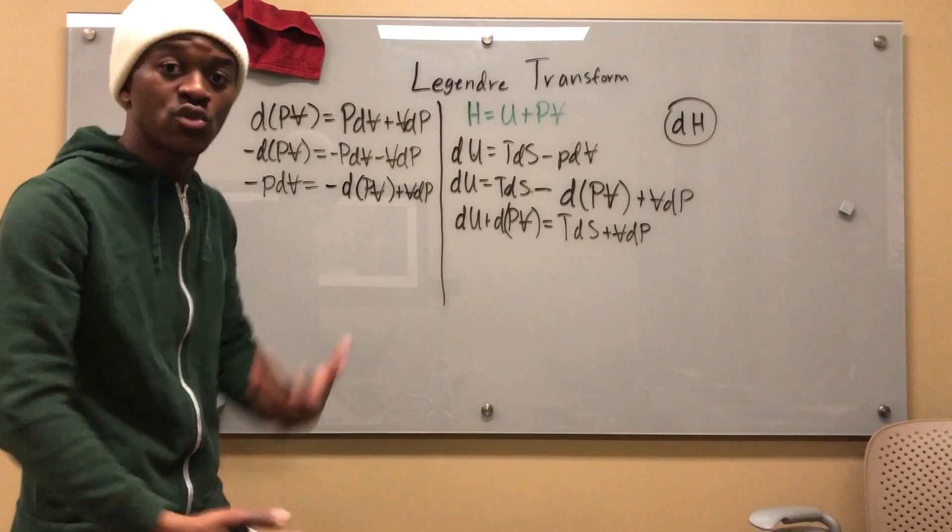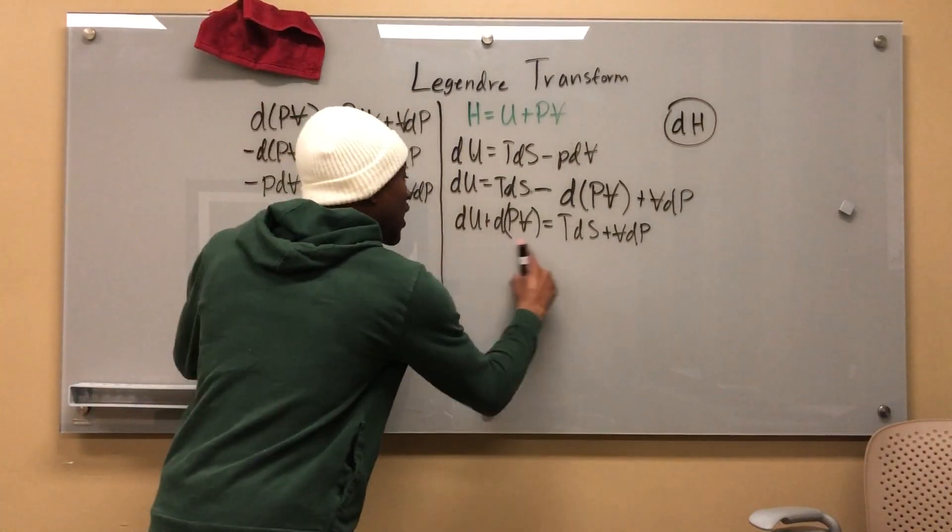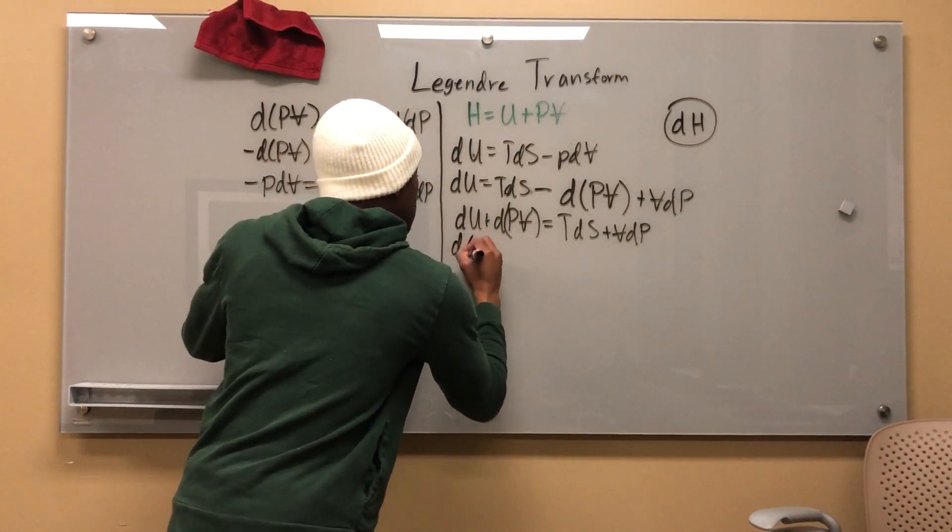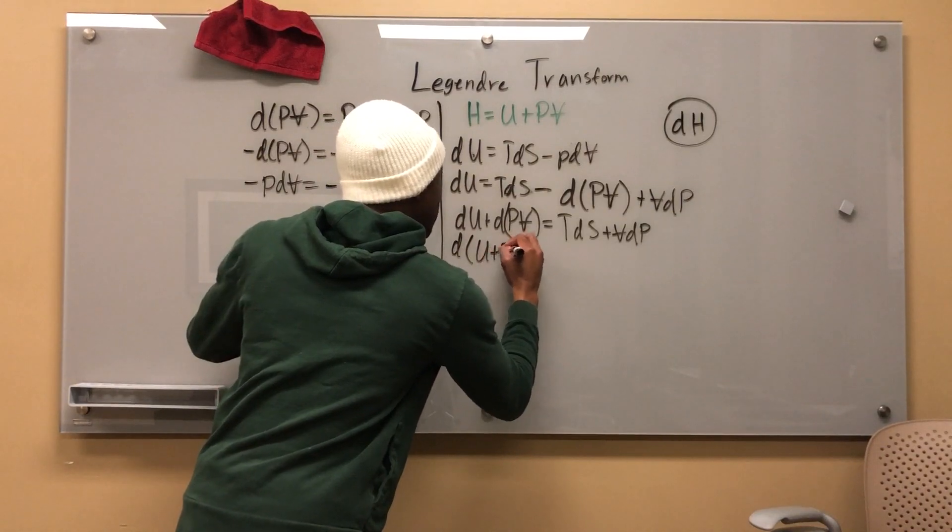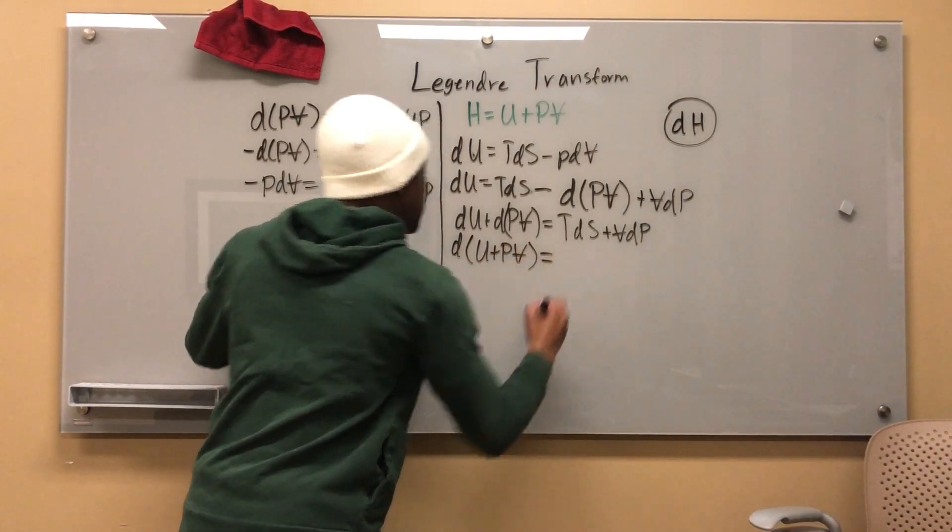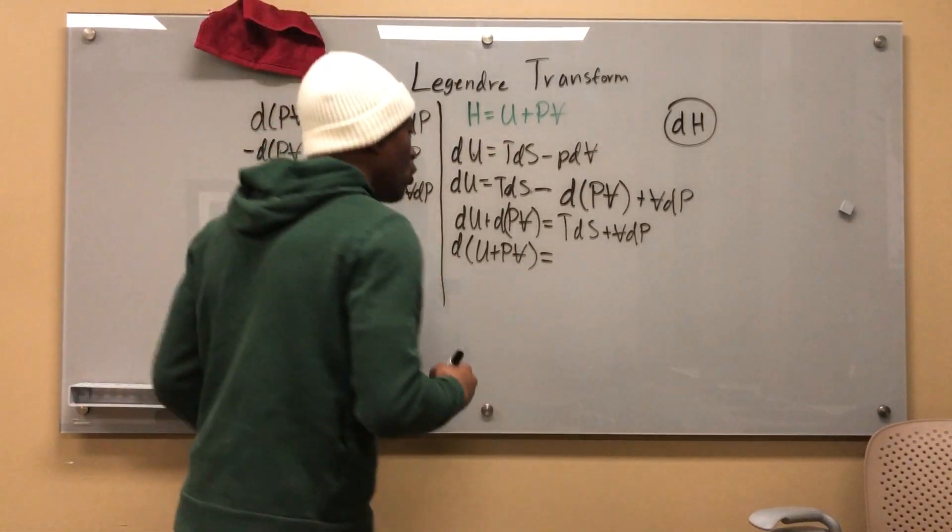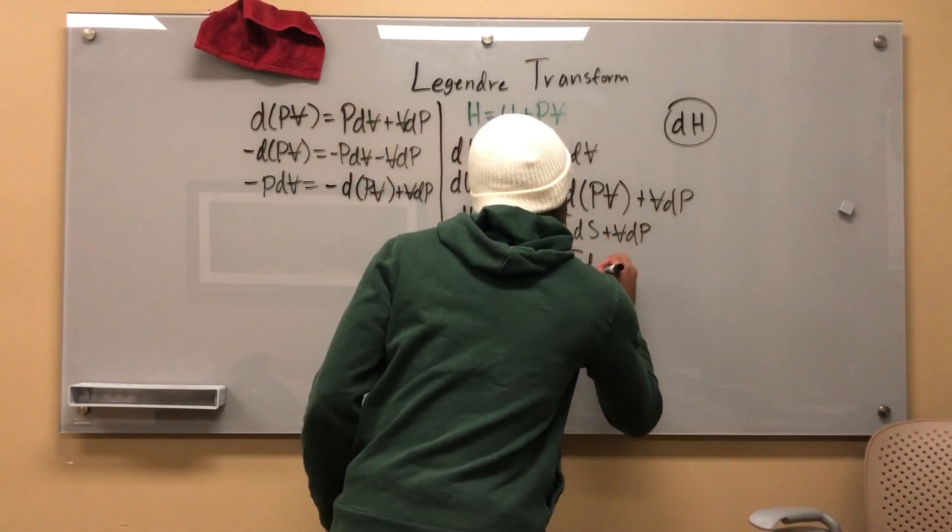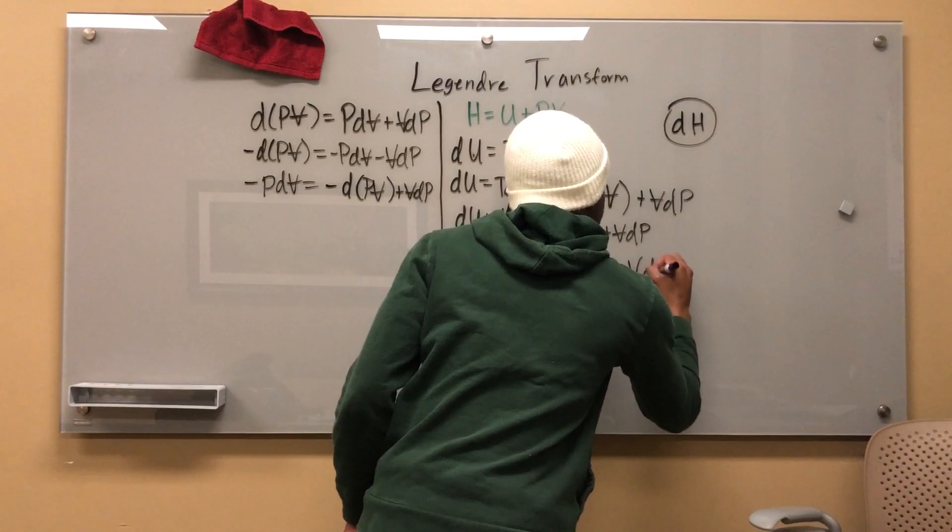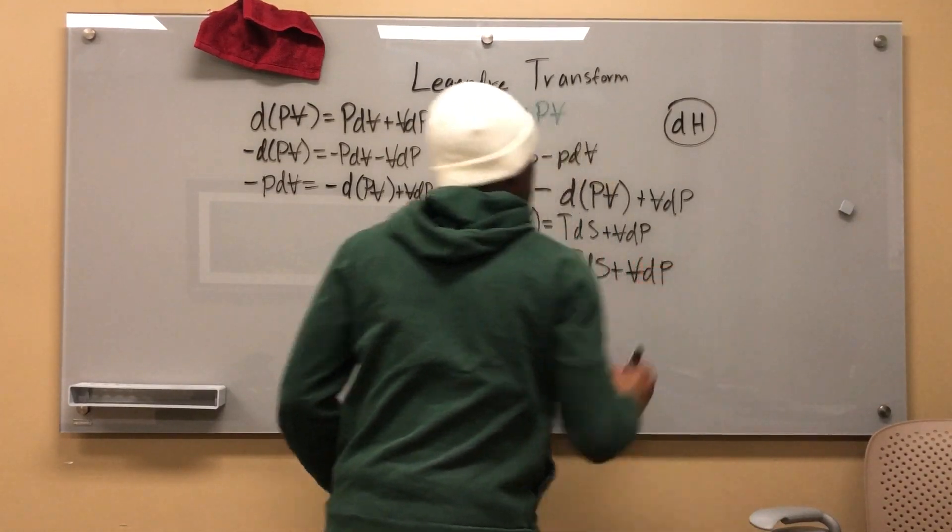Now, using just the rules of math and everything, I can go ahead and say that this term is equal to this term right here, dU plus PV. What does that look like? Enthalpy, right? Cool. dU plus PV is equal to TdS plus VdP.